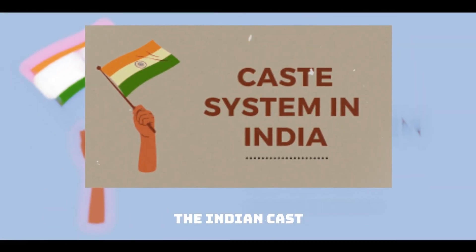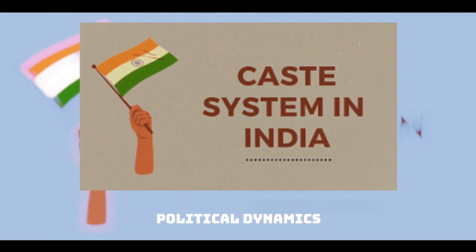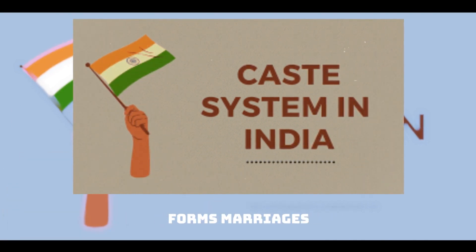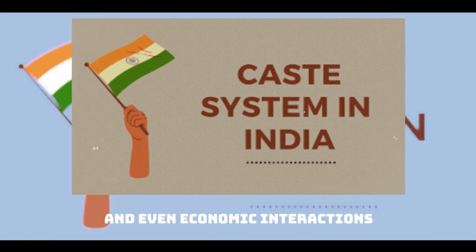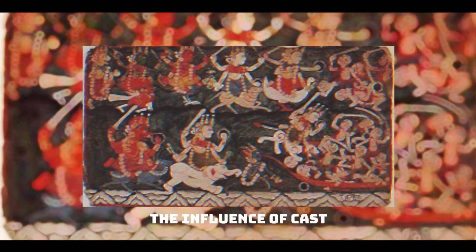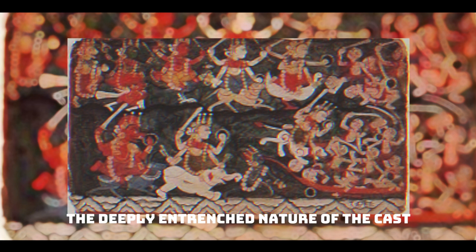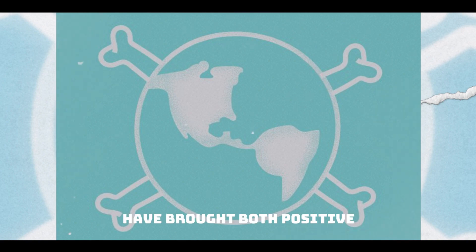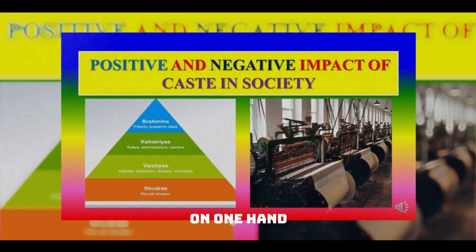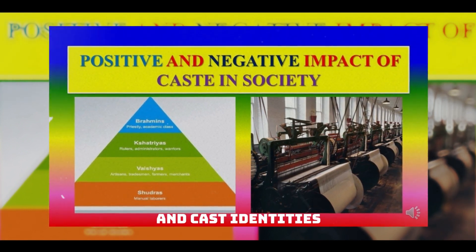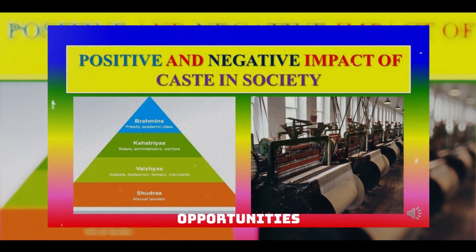In the contemporary landscape, the Indian caste system continues to shape societal structures, political dynamics, and cultural practices. While legal frameworks have sought to address discrimination, the caste mindset persists — marriages, social gatherings, and economic interactions often carry the shadow of caste considerations. Moreover, globalization and urbanization have brought both positive and negative impacts: increased education and awareness have challenged traditional caste norms, yet economic disparities persist and caste identities still shape opportunities and experiences.